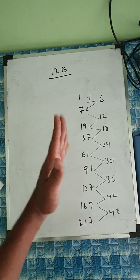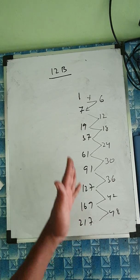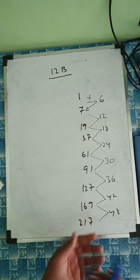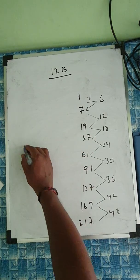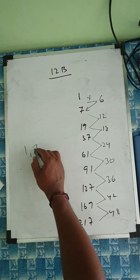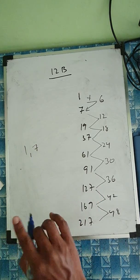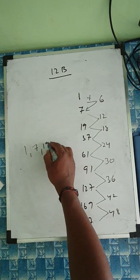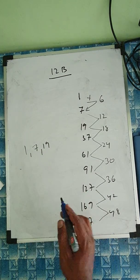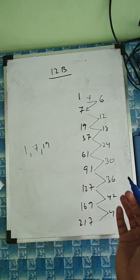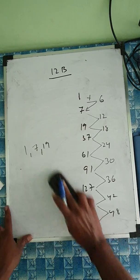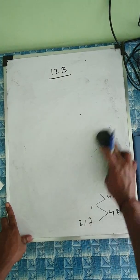To summarize the trick: write 1, then add 6 to get 7, then keep adding the next multiple of 6 each time — so 7+12=19, 19+18=37, and so on. That's the easy way to generate the subtraction sequence.